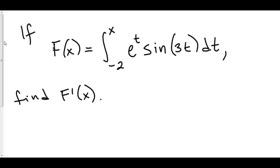Problems using FTOC Part 1 are ridiculously easy. Check it out. If big F of x is equal to the integral from negative 2 to x of e to the t, sine of 3t dt, find the derivative of big F.